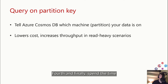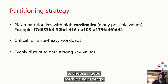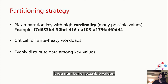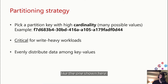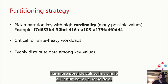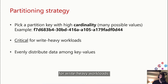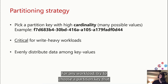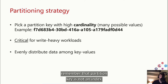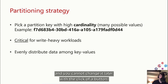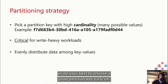Fourth and finally, spend the time to choose a good partitioning strategy. For write-heavy workloads, it is critical that you pick a partition key with high cardinality — a larger number of possible values — to help avoid hot partitions on writes. For example, a massive GUID field has more possible values than a single-digit number or name field, and is therefore better as a partition key for write-heavy workloads. For any workload, try to choose a partition key that evenly distributes data among partition key values. Remember that partition key is not an index, and you cannot change it later with the click of a button — so do your best to choose a good partition key early on.